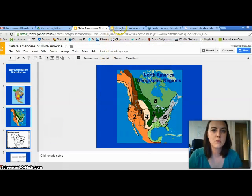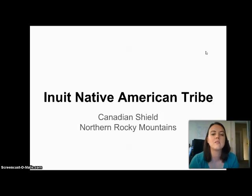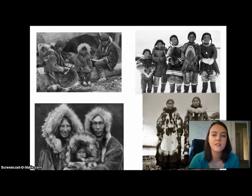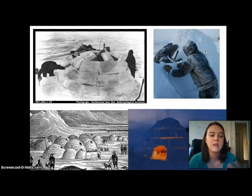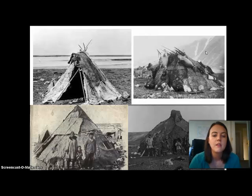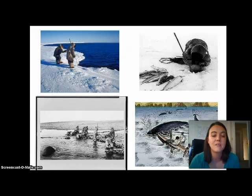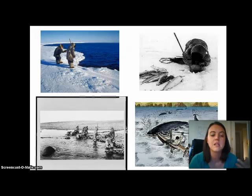The Inuit lived in the Canadian Shield and the northern Rocky Mountains. They used lots of seal skin and other animal skins to keep warm because it was very cold. During the winter and when they were on a hunt, they would make homes called igloos made out of ice and snow. Otherwise they had huts made out of skin, especially seal skin, and would live there more permanently. They did a lot of hunting and had a diet high in meat proteins and fats because they burned a lot of calories. They ate fish, seal, whale, and would also dig for mussels like clams and oysters.